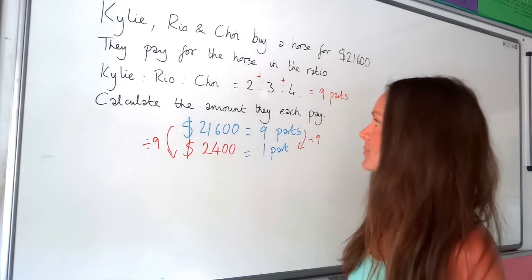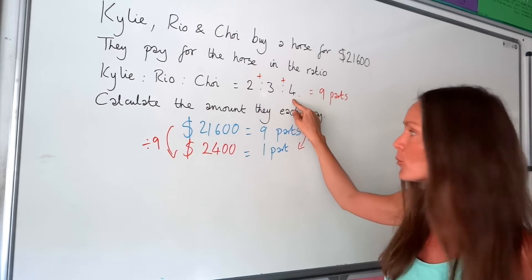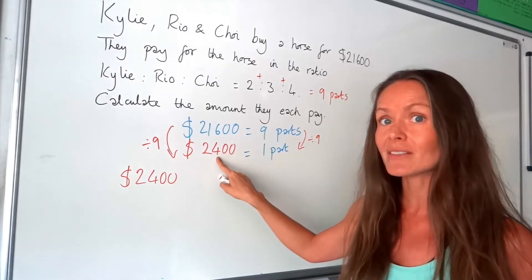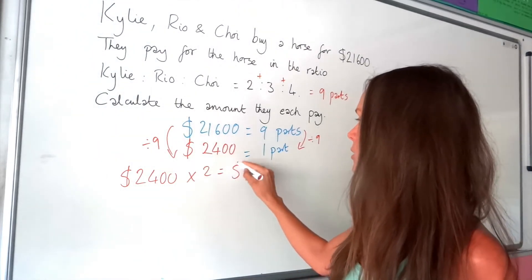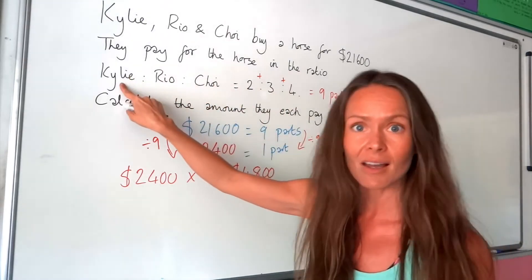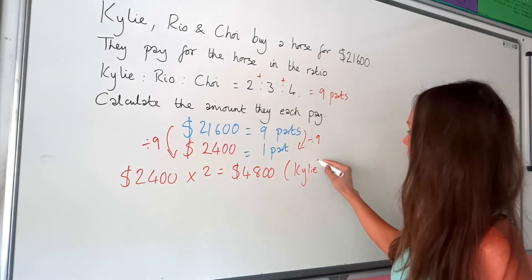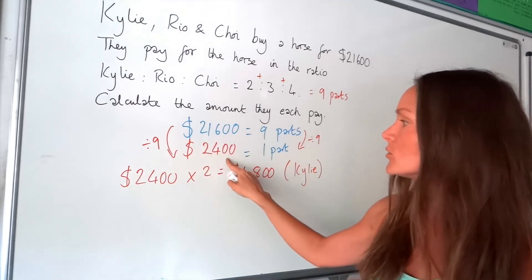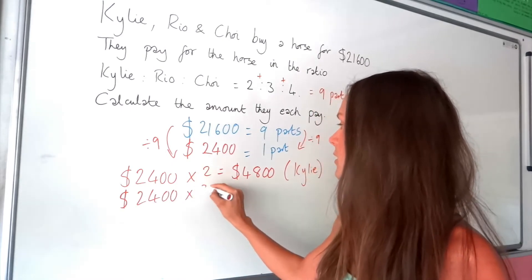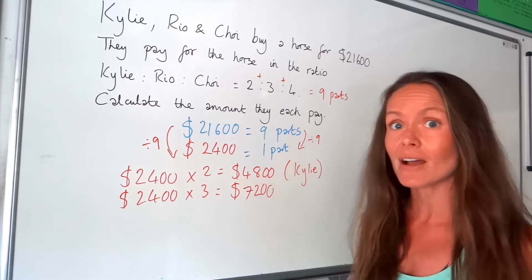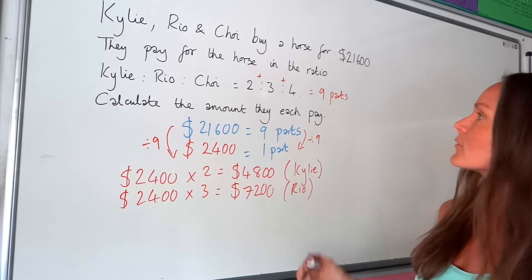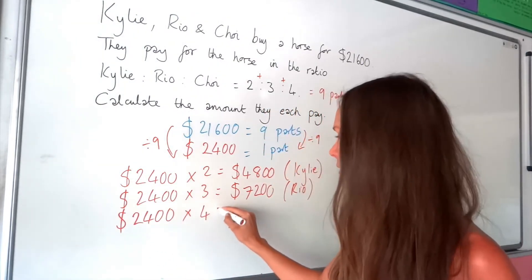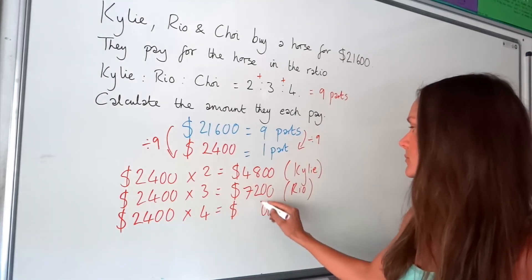Now we just have to work out two parts, three parts, and four parts. To find two parts, we multiply one part by two: 2,400 multiplied by two gives $4,800. That's how much Kylie pays. For Rio, we work out three parts: 2,400 multiplied by three gives $7,200. Finally, for Troy, which is four parts, 2,400 multiplied by four gives $9,600.